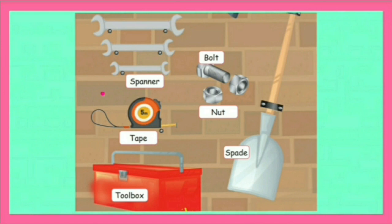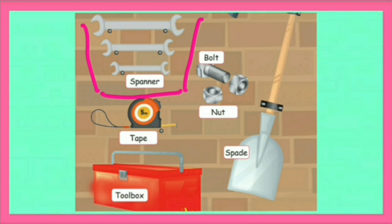Spanner. Spanner is a metal tool with an end shaped for turning small metal rings, that is nuts and pins, bolts that are used for holding things together.